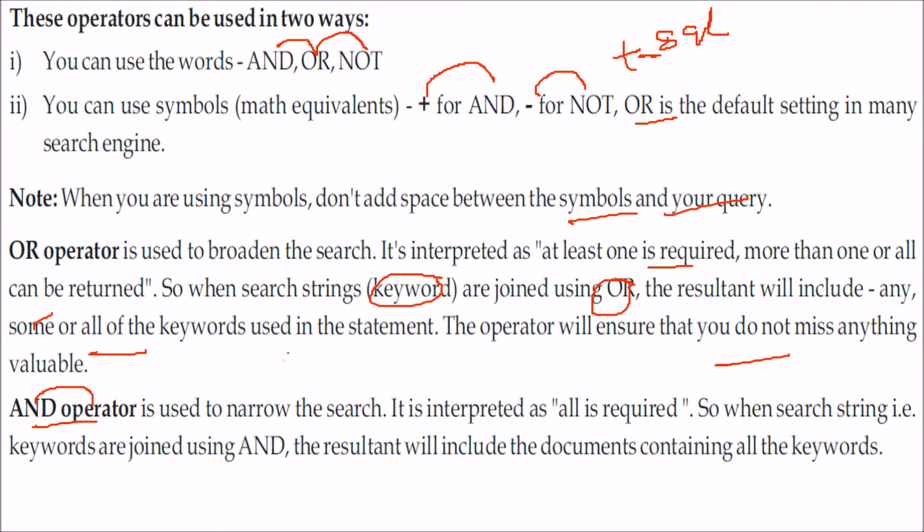While this AND operator is used to narrow the search, it is interpreted as all is required. So when keywords are joined using AND, that is plus, the result will include the documents containing all the keywords.